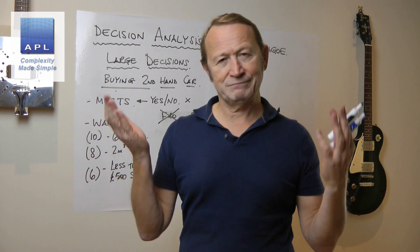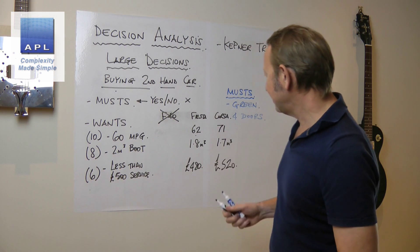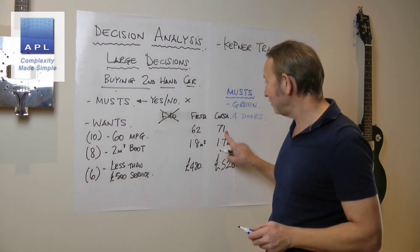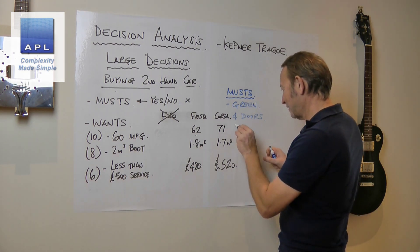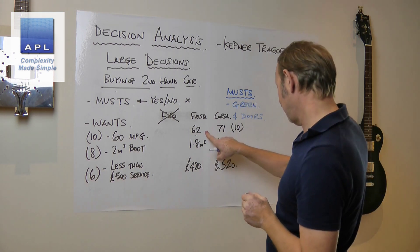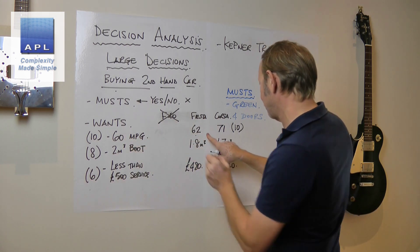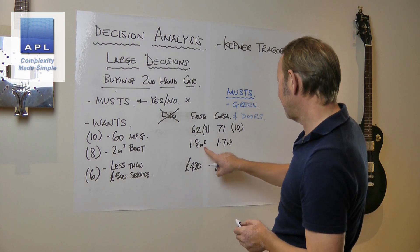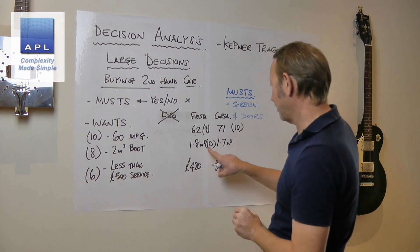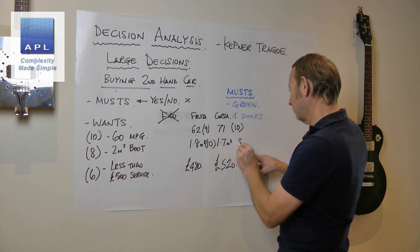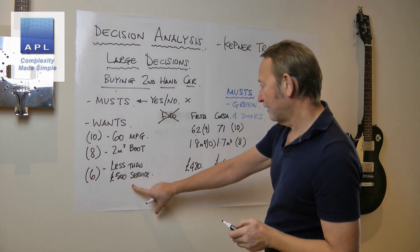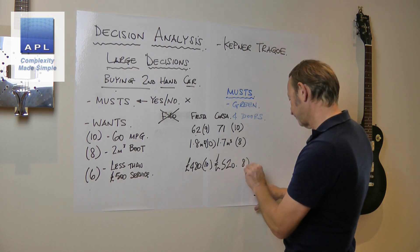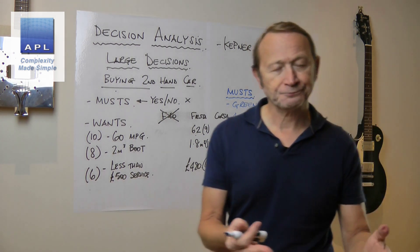Now I've got my three features scored. What we're going to do is give these a score - the best result always gets a 10. The Corsa gets 10 for miles per gallon, and we give the Fiesta a relative score - it's still meeting our criteria so I'll give it a 9. For boot size, the Fiesta is best so it gets 10, the Corsa at 1.7 is getting too small so I'll give it an 8. Less than 500 pounds on servicing - the Fiesta scores 10, the Corsa gets 4.